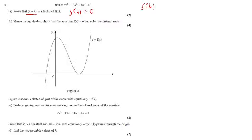And because it's a prove that question, I'm going to show my substitution here to make it really clear to an examiner. So I'm going to do 2 times 4 cubed minus 13 times 4 squared plus 8 times 4 plus 48.